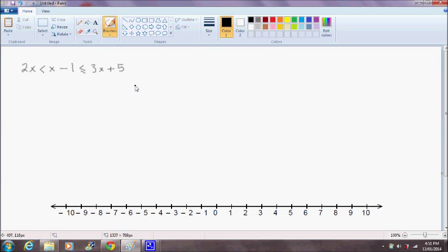Now, this sort of expression has to be solved in two parts. First, the left-hand part, 2x is less than x minus 1, and the right-hand part, which is x minus 1, is less than 3x plus 5. So let's look at these two cases separately.